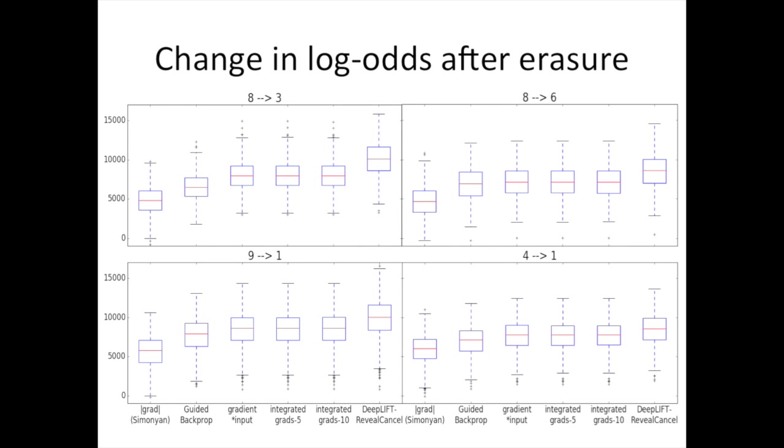To get a sense of the behavior across several examples, we can look at these box plots. The y-axis is the change in log-odds of the original class versus the target class after erasing the pixels. The source and target classes are shown at the top of each figure. We used a thousand examples that belong to each class in the testing set to compute these box plots.